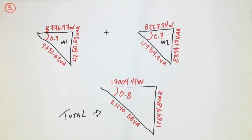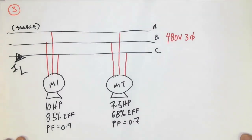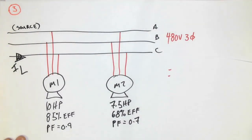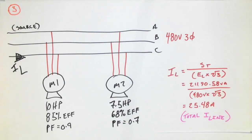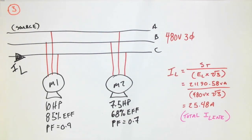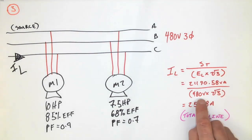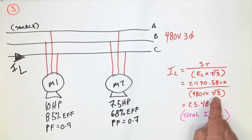Finally, the total for this particular circuit — the line current values, which were what was being asked for. Going back to the original question: 480-volt three-phase system, the total line current equals 25.48 amps, because we took the total S and divided it by the voltage — the line value times root three — to get just over 25 amps.